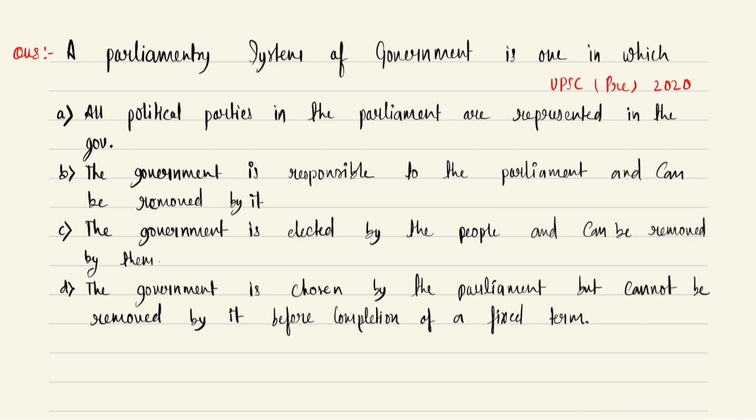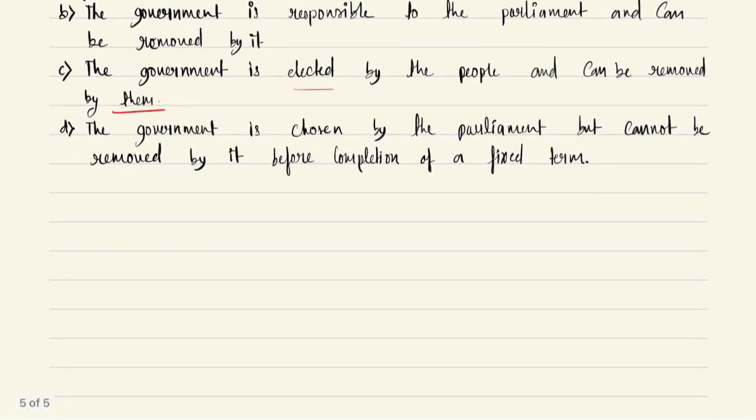Option A: All political parties in the parliament are represented in the government. Option B: The government is responsible to the parliament and can be removed by it. Option C: The government is elected by the people and can be removed by them. Option D: Government is chosen by the parliament but cannot be removed by it before completion of a fixed term.